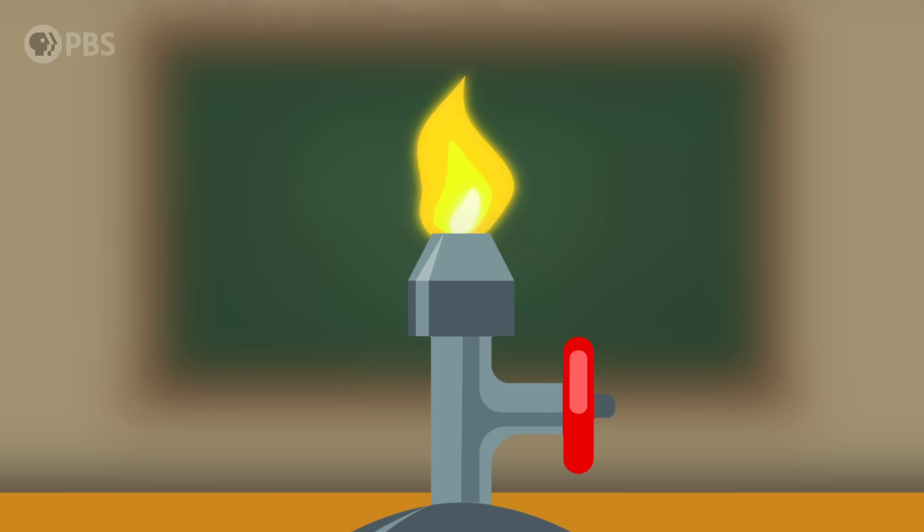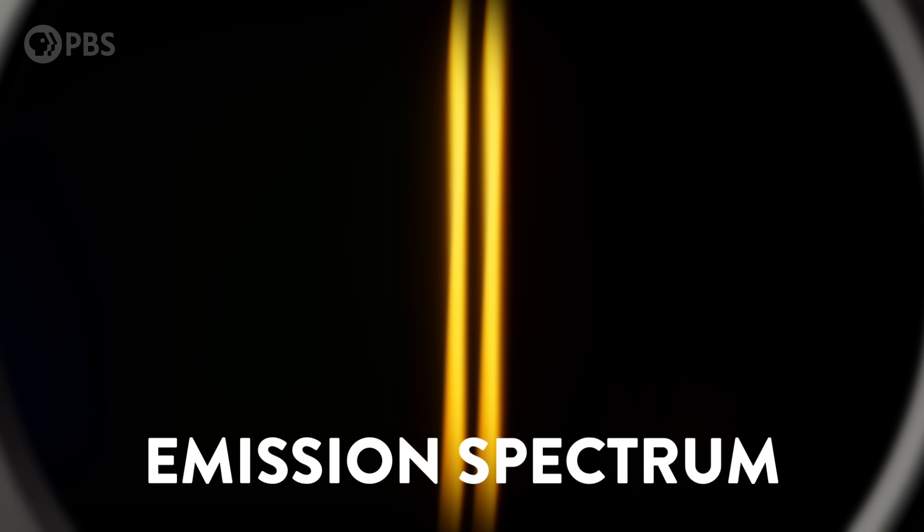For example, if you heat table salt, you'll always see the same two lines in the exact same part of the spectrum, as certain electrons in sodium absorb energy and then return to their ground state, giving off light. This is called an emission spectrum.